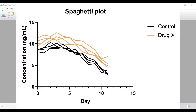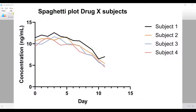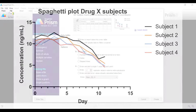The next spaghetti plot variation is one where each subject or replicate in a single experimental group is plotted and the lines are coloured differently for each replicate. In this example, only the data from the drug X group is presented and each subject is coloured differently. This is useful when you want to show the variation of subjects or replicates in one group.